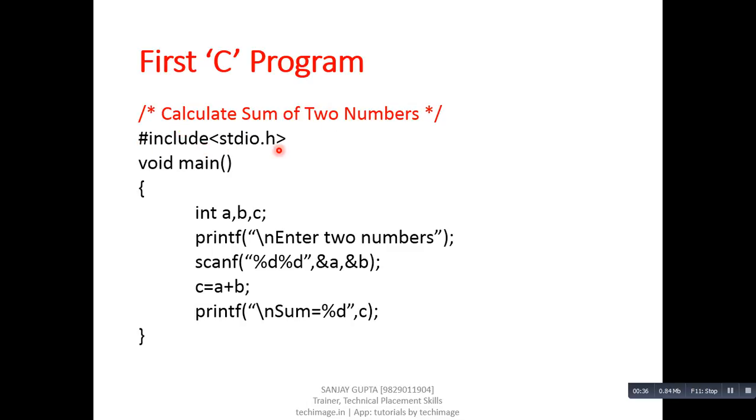The second statement is hash include stdio.h. Here, hash include is known as a preprocessor directive. Preprocessor directives are used to include a header file in the program. Now you are thinking, what is a header file? Here, stdio.h is known as a header file.